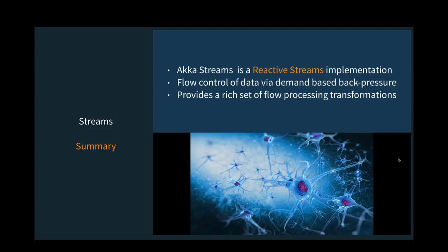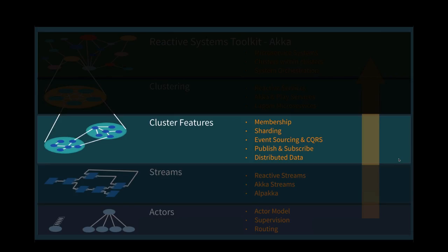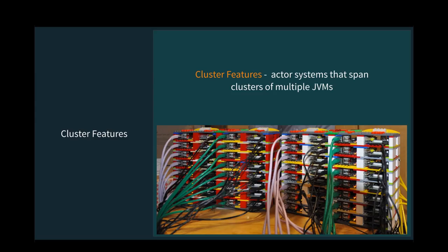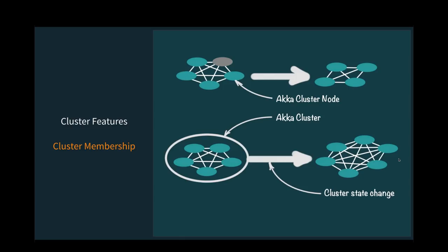The big thing with ACA Streams is reactive streams with back pressure and a rich set of controls for transforming data. People are doing lots of really interesting things with streaming these days. This is my personal favorite area: clusters. As a longtime Java developer, when I first went to ACA, I was blown away that you're no longer constrained to a single JVM — you can build a system that behaves as a single system running in a distributed environment with multiple JVMs.